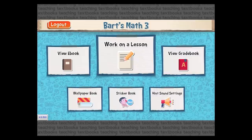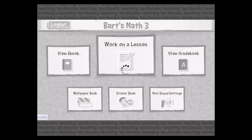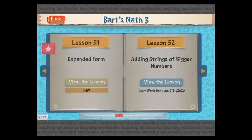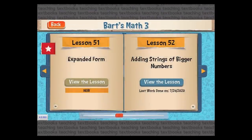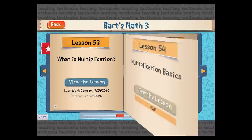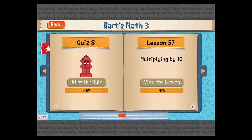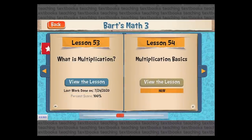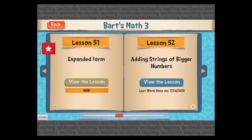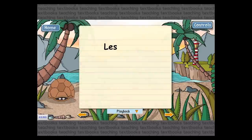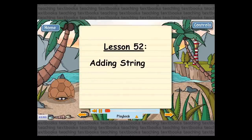To get started, I'm going to tap Work on a Lesson. That takes me to a screen that allows me to select the lesson I want to do. I'm going to do Lesson 52, so I just tap View the Lesson — Lesson 52: Adding Strings of Bigger Numbers.